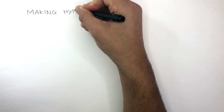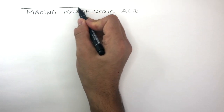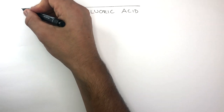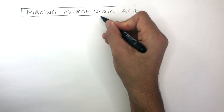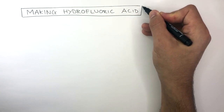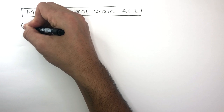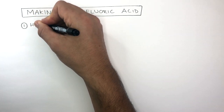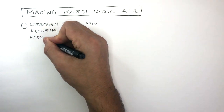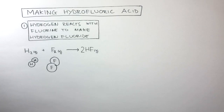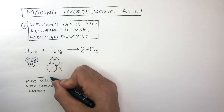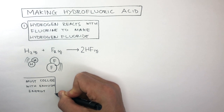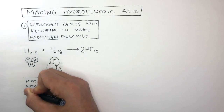We're now going to focus on the process of making hydrofluoric acid, though your exam could ask about hydrofluoric, hydrochloric, or hydrobromic acid — the same processes apply with a different halogen. The first process is a chemical reaction: hydrogen reacts with fluorine to make hydrogen fluoride. A hydrogen molecule and a fluorine molecule must collide with enough energy — the activation energy — for a reaction to take place.